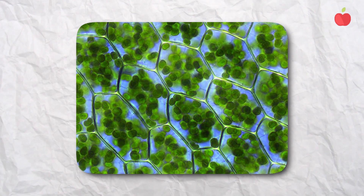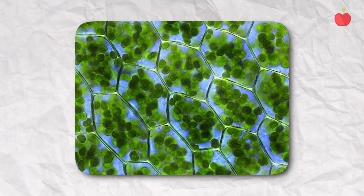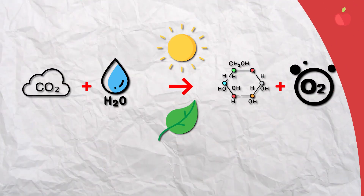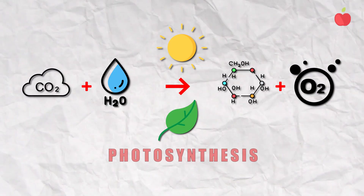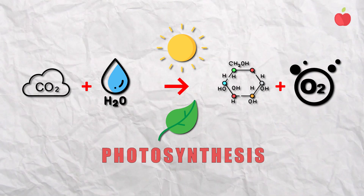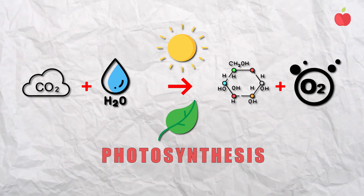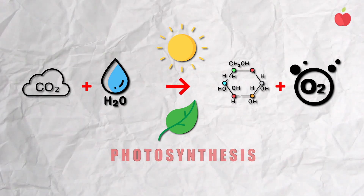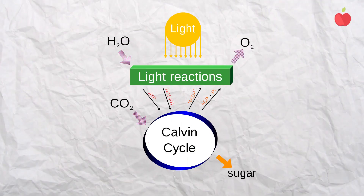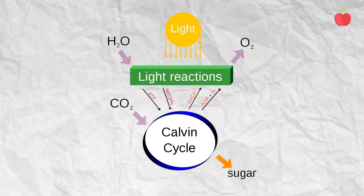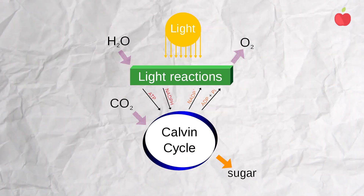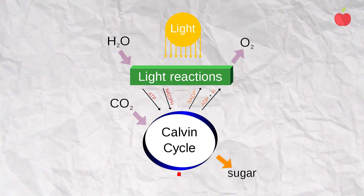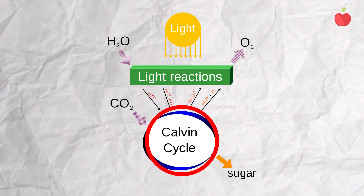Photosynthesis is an intricate process that takes place in a part of plant cells called chloroplasts. These use light, water, and carbon dioxide to make food for the plant to grow. This process is divided into two parts: light dependent reactions, and light independent reactions. The light independent reactions are also called the Calvin cycle.